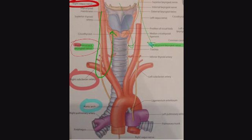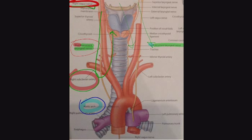It's important to note that the right recurrent laryngeal nerve goes below the right subclavian artery, while the left recurrent laryngeal nerve goes below and arches over the arch of the aorta. This difference has an embryological basis, which I'll discuss briefly in another video.